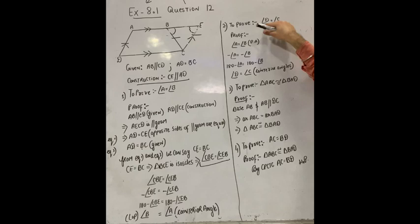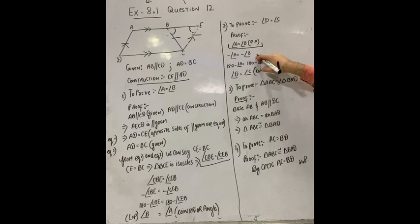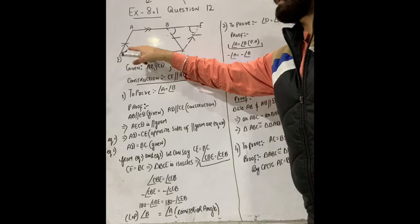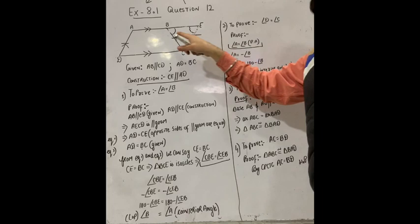This completes the proof that angle A is equal to angle B. In the second part, you have to prove angle D is equal to angle C. Using co-interior angles: 180° minus angle A, and 180° minus angle B, with the reason being co-interior angles.